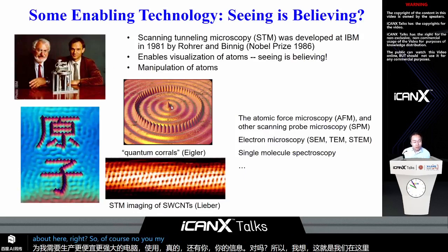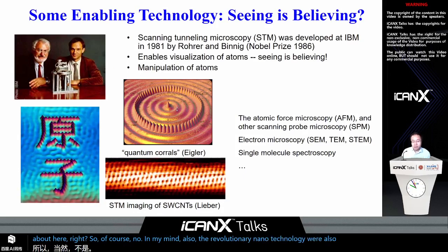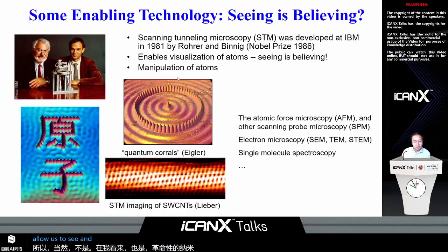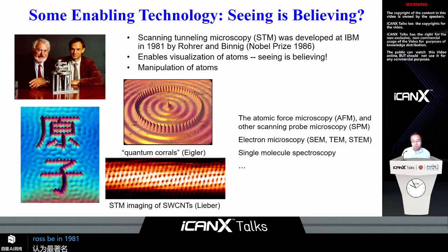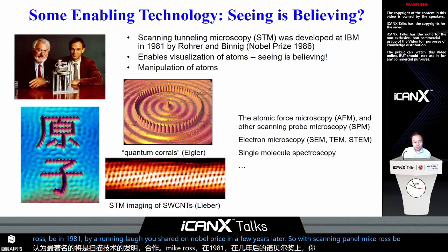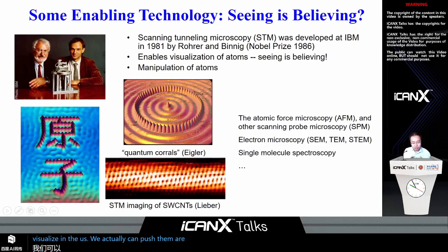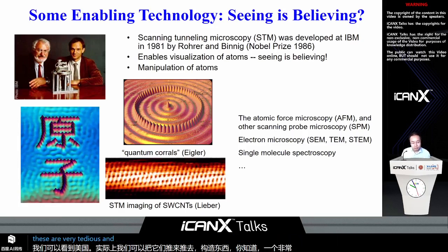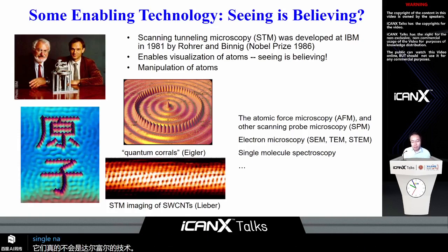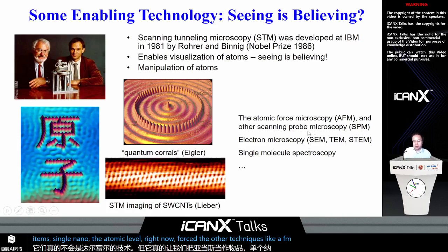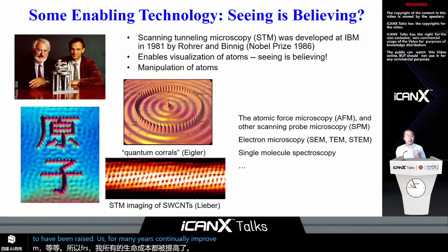The revolutionary nanotechnology was also enabled by new tools that allow us to see and understand things at the atomic scale. Most notable is the invention of scanning tunneling microscopy in 1981 by Rohrer and Binnig, who shared the Nobel Prize a few years later. With scanning tunneling microscopy we can visualize individual atoms, push them around, and construct things at a very precise atomic scale — even though these are tedious and low throughput, they really allow us to think about nano at the atomic level.